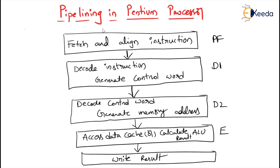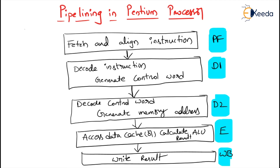In the execute and write back stages, the CPU updates the registers and flags with the instruction results. All exceptional conditions must be resolved before an instruction can advance to the write back stage. These are the stages that make up the integer pipeline.